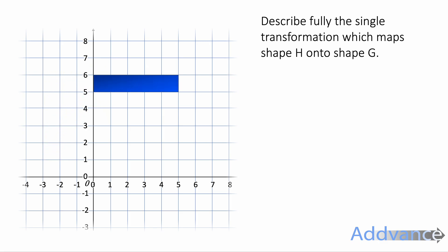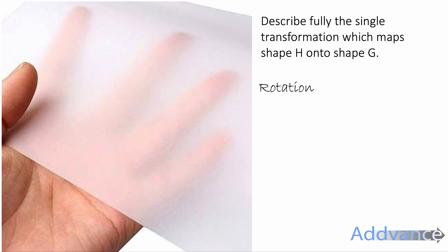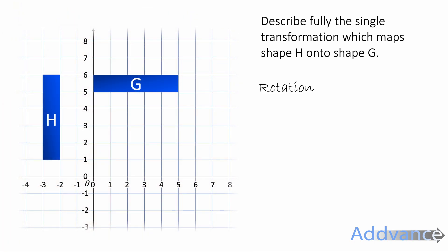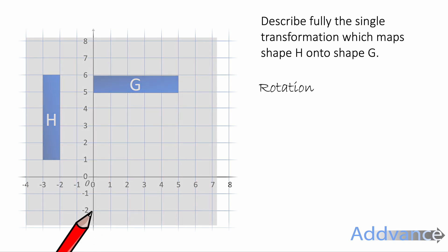Describe fully the single transformation which goes from H to G. And you should see this is a rotation. When we're doing rotations, make sure you use tracing paper so that can help you figure out how it's rotated. So we take tracing paper, like this, and we put it over the top of our graph.